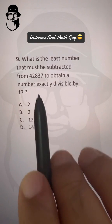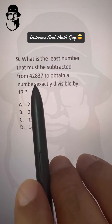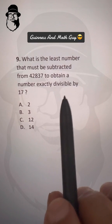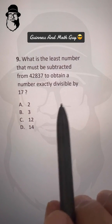What is the least number that must be subtracted from 42,837 to obtain a number exactly divisible by 17?